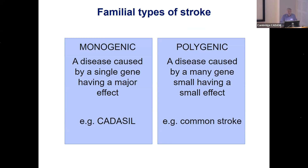Genetics is very important in stroke and we're discovering how important it is. One way to look at this is to divide it into diseases which we call monogenic — where you've got one gene that causes the stroke — and polygenic — where you've got lots of genes that all have small effects and together cause a stroke. CADASIL is a monogenic disease because an abnormality in one gene results in stroke. We also do a lot of research on polygenic influences for stroke and we've discovered 50 or 60 genes that increase the risk of general stroke in the population, but that's for a different day.